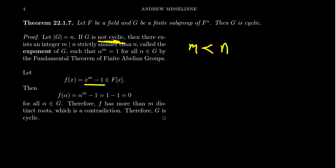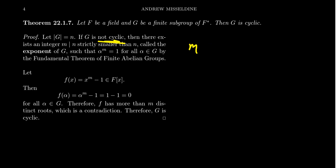Consider the polynomial x^m − 1, viewed as a polynomial over the field. If you take any element alpha from G and plug it in, you get alpha^m − 1. But since m is the exponent, alpha^m = 1, so alpha^m − 1 = 0. So every element of G is a root of this polynomial. But since m < n, that means this polynomial has more roots than its degree — a contradiction. Therefore, the exponent and the order of the group must be equal, which forces G to be cyclic and proves our theorem.